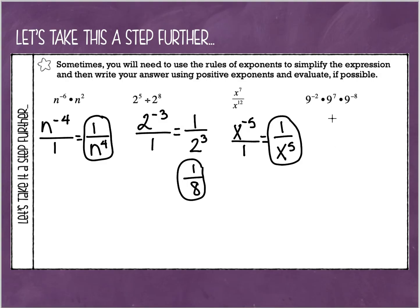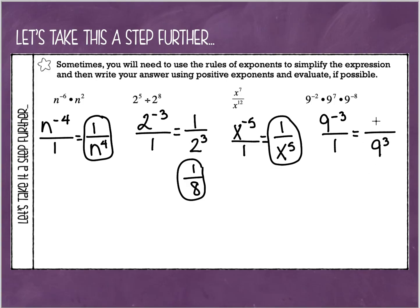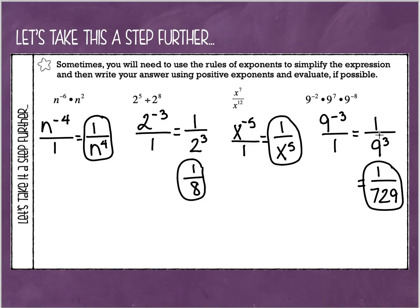For our last example in this set, we have a multiplication problem with the same base, so let's keep that base of 9. When I add negative 2 plus 7, I get 5, and 5 plus negative 8 is negative 3. I do not want a negative exponent, so let's make it a fraction. To make my negative 3 positive, I move it down to the denominator and put a 1 in the numerator as my placeholder. Because this has no variable, I can simplify: 9 to the 3rd power is 729, so the simplified expression is 1 over 729. Sometimes they may ask you to write your answer with a positive exponent — you'd stop at 1 over 9 to the 3rd. But if they ask you to evaluate it, that means find out what it actually equals.